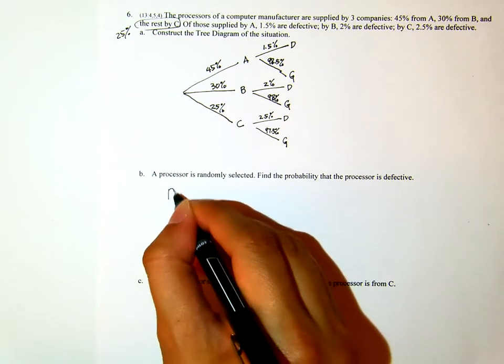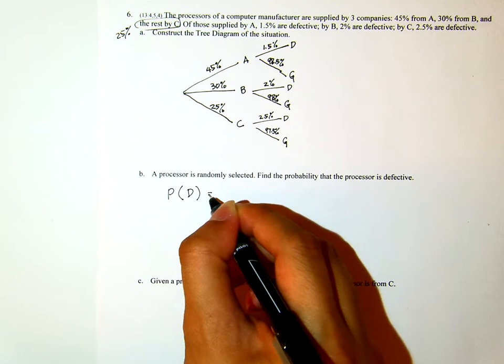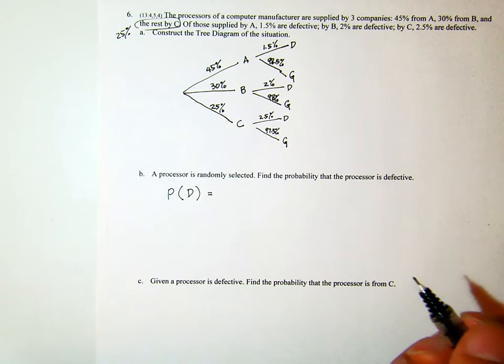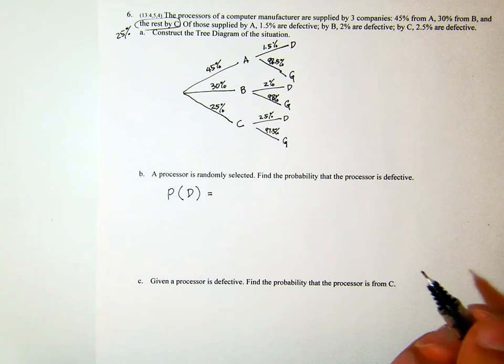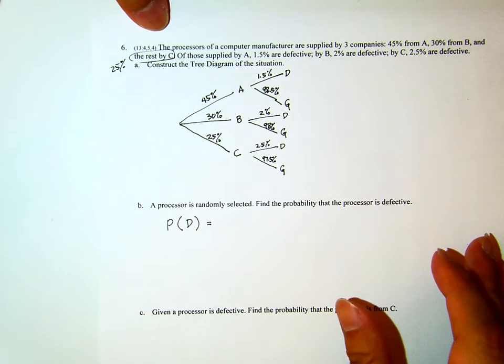We want to find the probability that if you select one processor at random, randomly selected one processor, what is the probability that the processor that you randomly selected is defective.